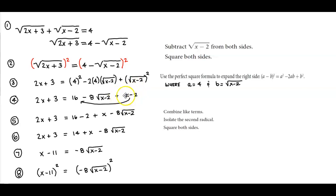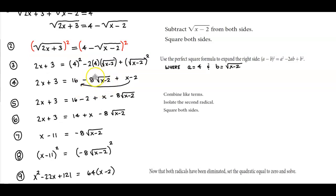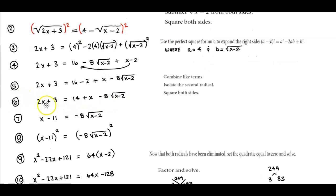Next we rewrite and combine like terms. The radical term must remain by itself as it is not like the other terms. So we have 2x plus 3 equals 16 minus 2 plus x minus 8 times the square root of x minus 2. Combining like terms gives us 2x plus 3 equals 14 plus x minus 8 times the square root of x minus 2.